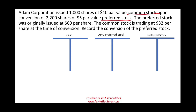Adam Corporation issued 1,000 shares of $10 par value stock upon the conversion of 2,200 shares of preferred stock. The preferred is going out and we're replacing it with the common. The preferred stock was originally issued at $60, while the common is trading at $32. At the time of the conversion, record the conversion of the preferred stock.